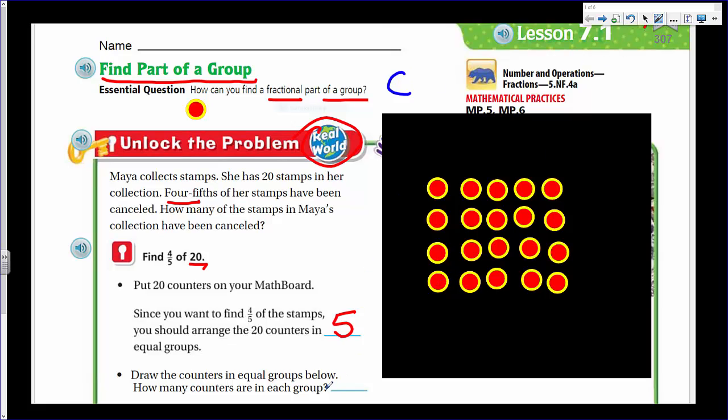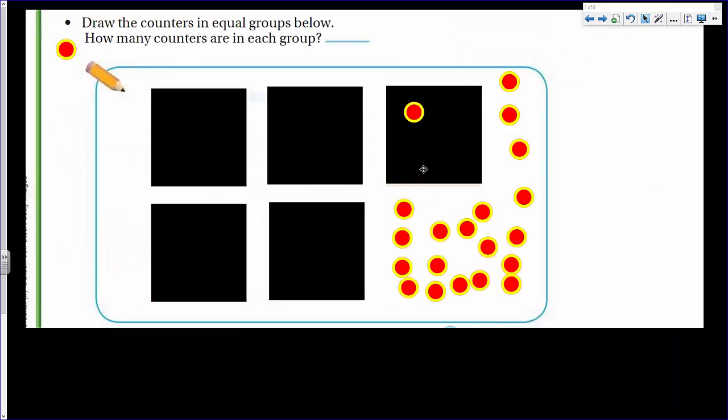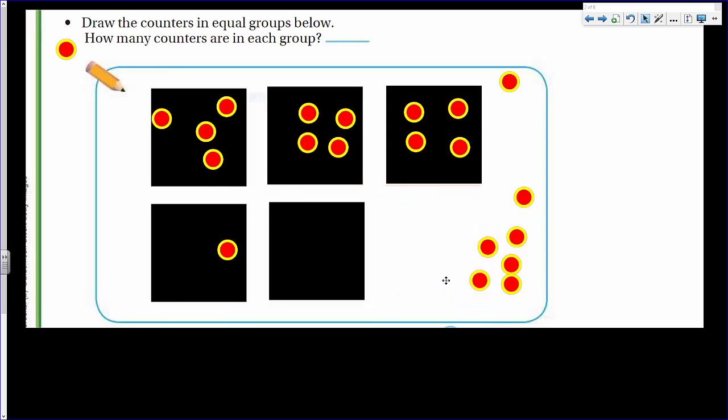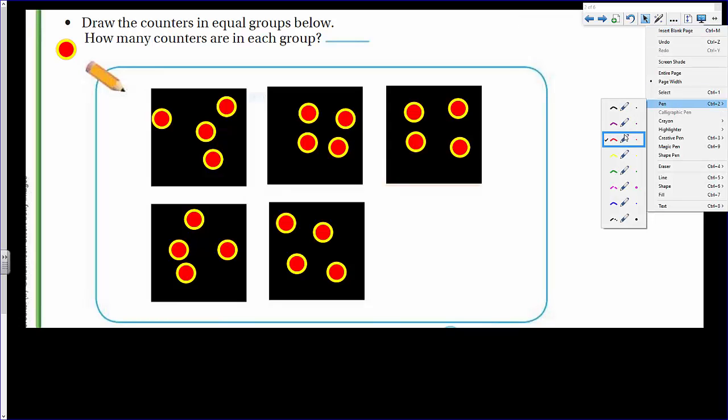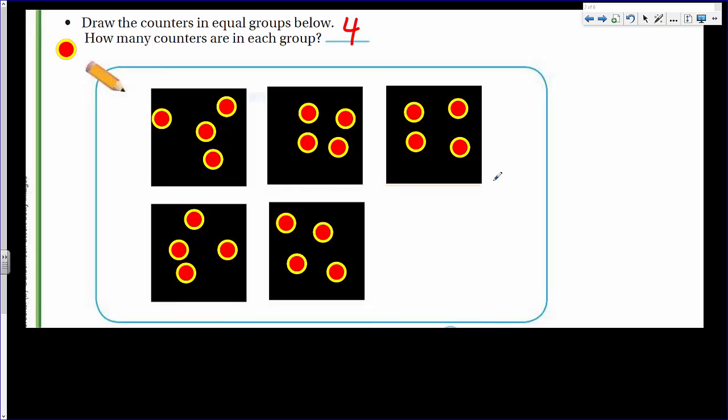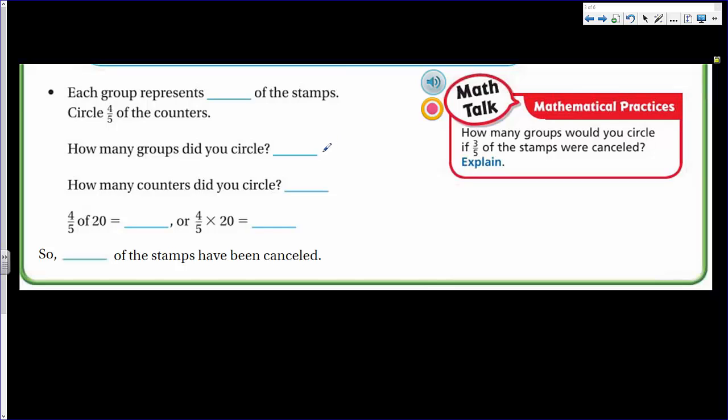Now, what we're going to do here is draw the counters in equal groups below and how many counters are in each group. So we'll go on to the next page. I already did this. I put four of them in each group. So I'm going to just drag these over real quick as you can see how I'm doing this. Cool. We're getting there. So it works out. How many counters are in each group? Well, I think we can answer that question pretty easily. That's going to be four. Four are in each group.